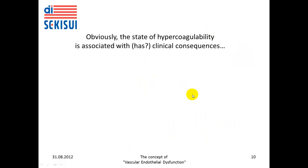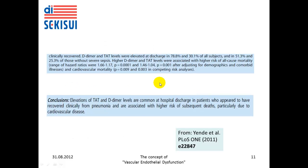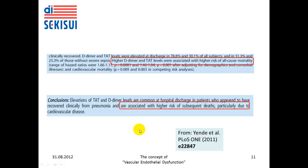Obviously, the state of hypercoagulability is associated with — or, if you think in causal terms, has — clinical consequences. This is exemplified by a publication by Yende and colleagues in 2011. They analyzed hemostasis markers after pneumonia and analyzed the one-year risk of all-cause and cardiovascular deaths in such patients. What they find is that higher D-dimer and TAT levels are associated with higher risk of all-cause mortality in this patient group.